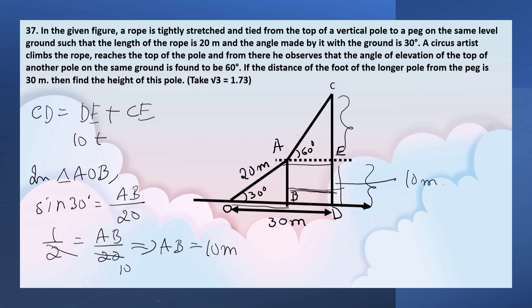OD minus OB equals BD. So OB can be calculated by using the cos ratio in triangle AOB. In triangle AOB, cos 30° equals OB by 20.